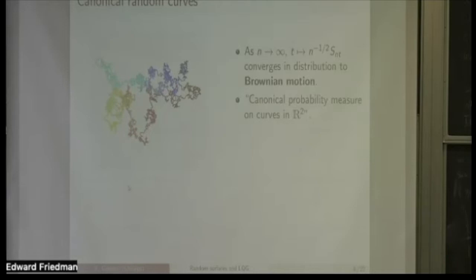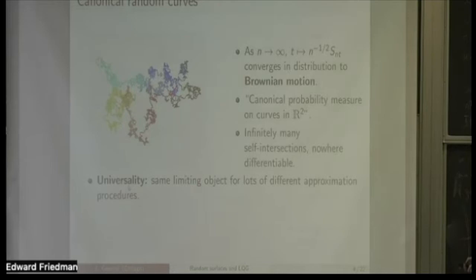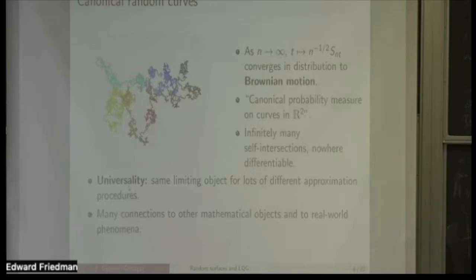A computer simulation of Brownian motion shows the colors indicating the time at which different points are hit. Brownian motion is very far from being a smooth curve — it has infinitely many self-intersections in every non-trivial interval of time, and it's nowhere differentiable. It has a fractal-type structure. Moreover, it has the property of universality: Brownian motion arises as the limit of various other types of interesting discrete objects, giving us a canonical object independent of the particular choice of discretization. Brownian motion is a very well understood mathematical object with connections to other topics in math and real-world applications.